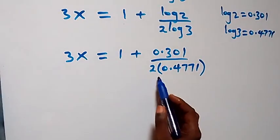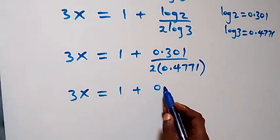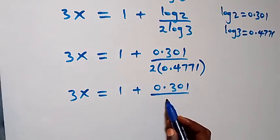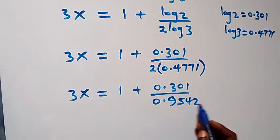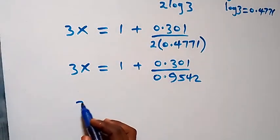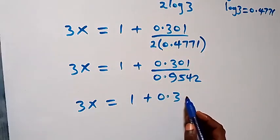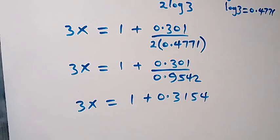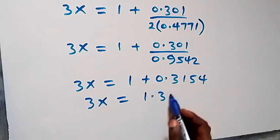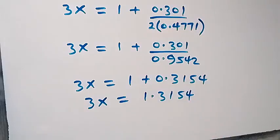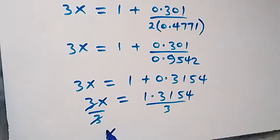When we substitute here, this becomes 3x equals to 1 plus 0.301 over 2 times 0.4771. When we simplify, we multiply the denominator first, and this gives us 3x equals to 1 plus 0.301 over 0.9542. When we divide, this gives us 3x equals to 1 plus 0.3154, so 3x equals to 1.3154. To get x, divide both sides by 3, and 3 cancels out.